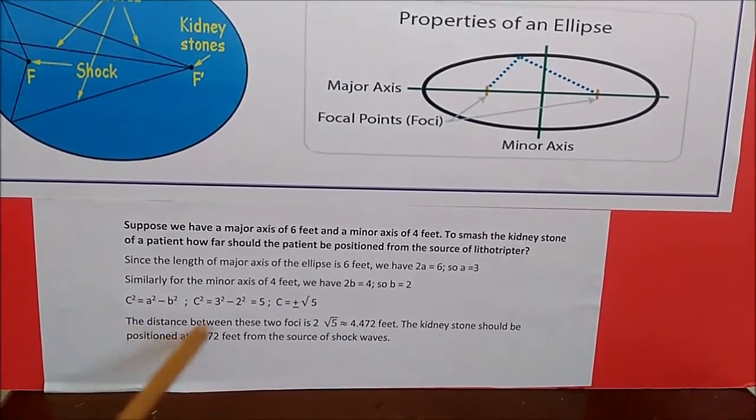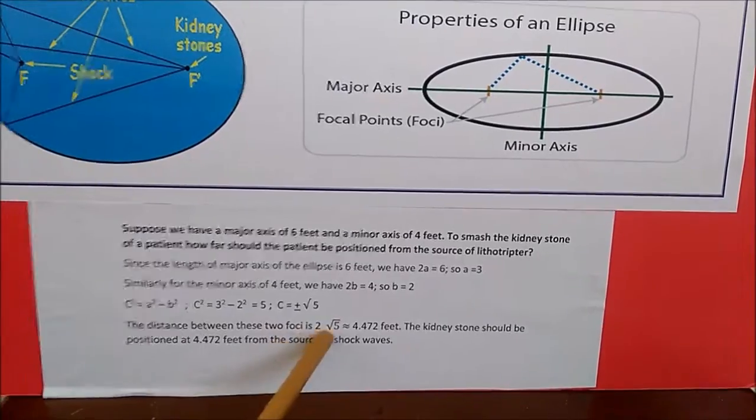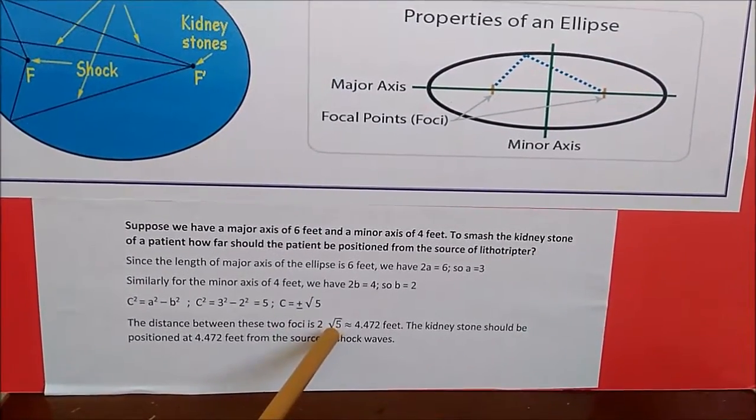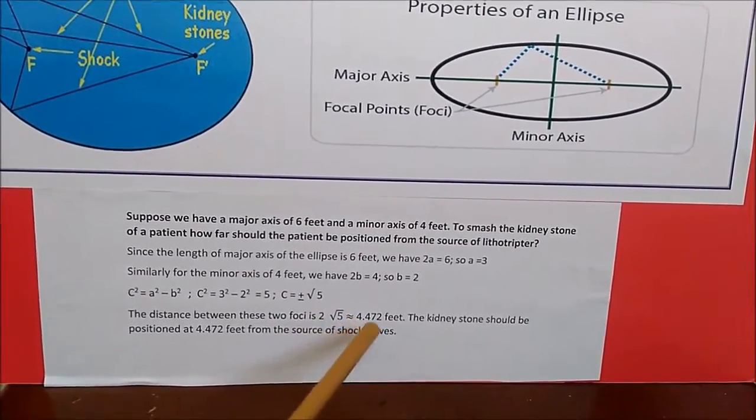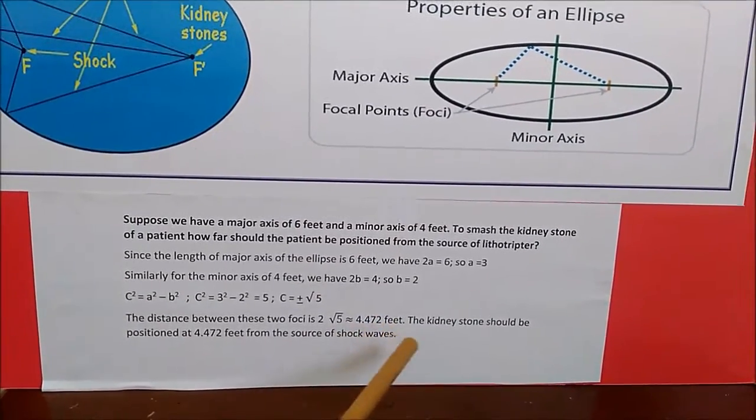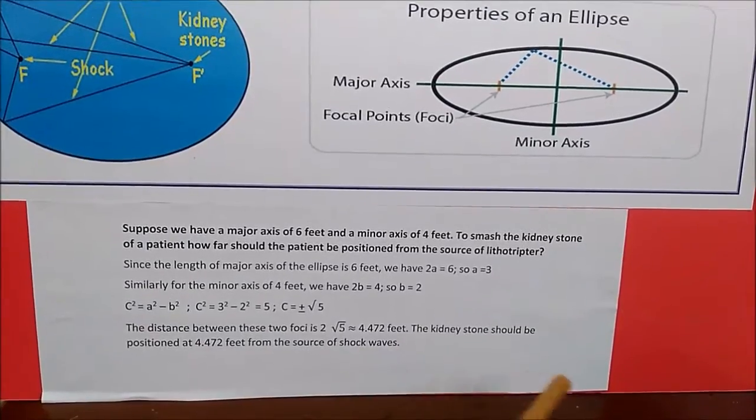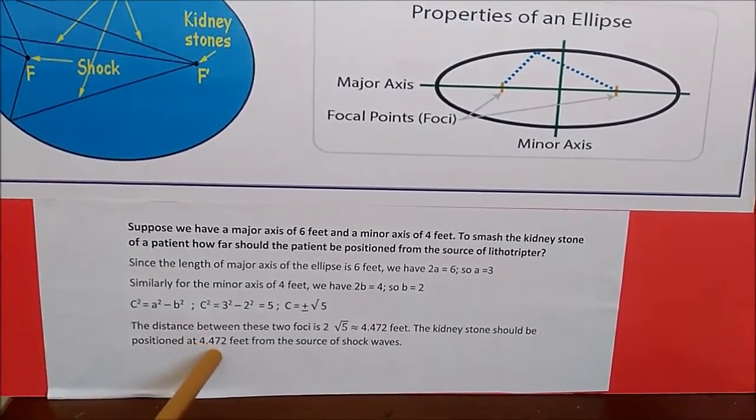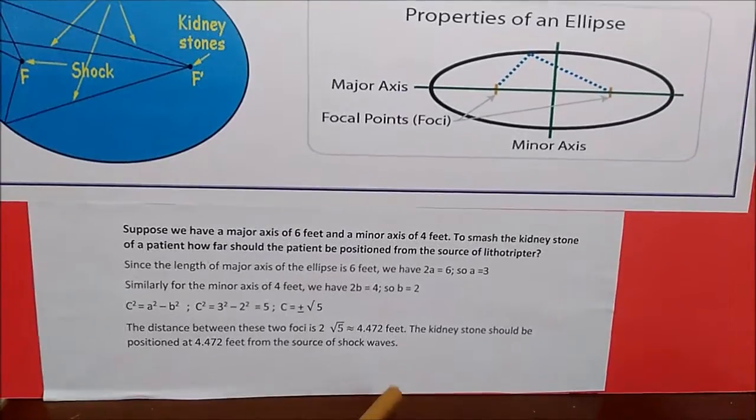The distance between those two foci is 2 times the square root of 5, which is equal to 4.472 feet. So the kidney stone should be positioned at 4.472 feet from the source of shockwave.